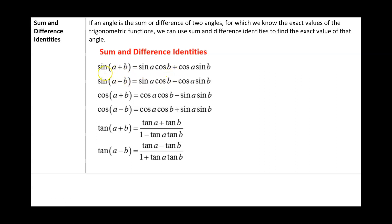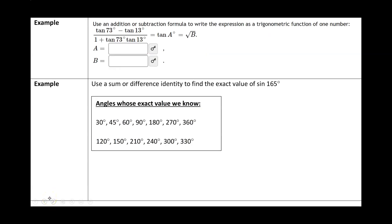We're going to be using these known angles and the sum and difference identities in order to find the exact values of angles we don't know. Here are the sum and difference identities. For example, sine of A plus B equals sine of A times cosine of B plus cosine A sine B, and so on. These you do not have to memorize — they will be provided on the exam in a formula sheet. The first problem says: use an addition or subtraction formula to write the expression as a trigonometric function of one number. We have tangent of A minus tangent of B divided by 1 plus tangent of A times tangent of B.